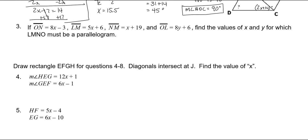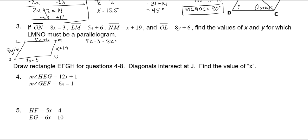If ON, LM, NM, and OL are all given, find the values of X and Y for which LMNO must be a parallelogram. ON is 8X minus 3, LM is 5X plus 6, NM is X plus 19, and OL is 8Y plus 6. Let's solve for X first using the top and the bottom—those are congruent. So 8X minus 3 is equal to 5X plus 6. Subtract 5X on both sides: 3X minus 3 is equal to 6. Add 3 to both sides: 3X is equal to 9. Divide by 3, and X is 3.